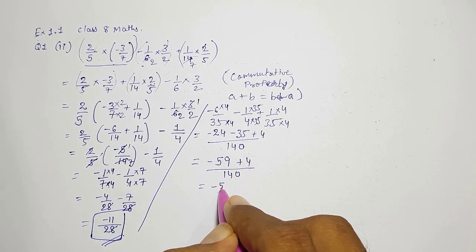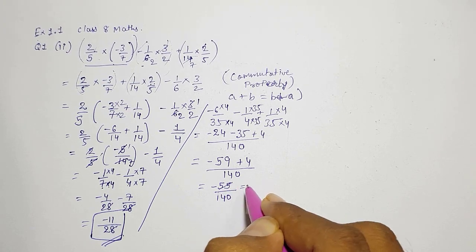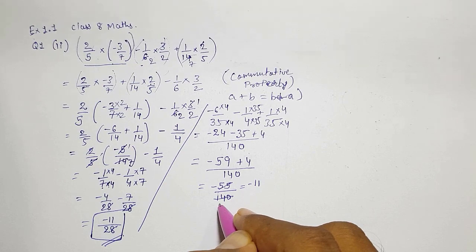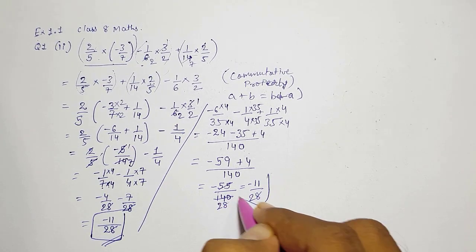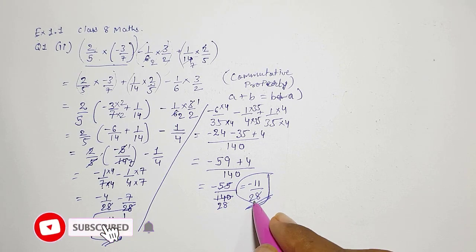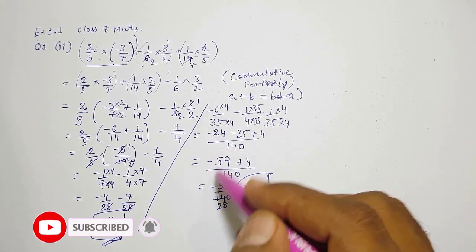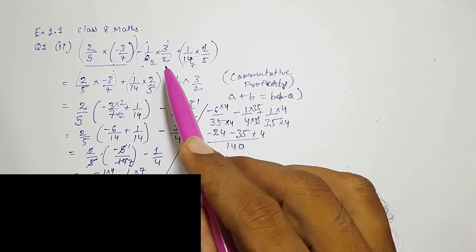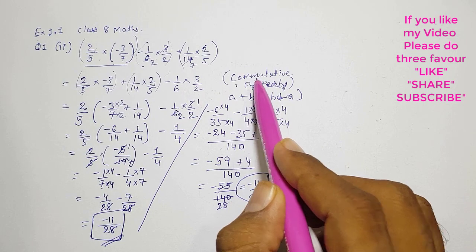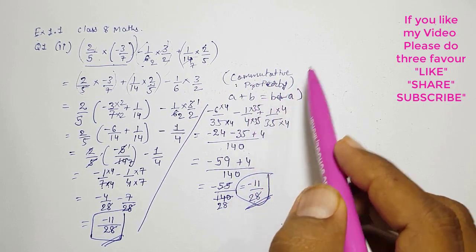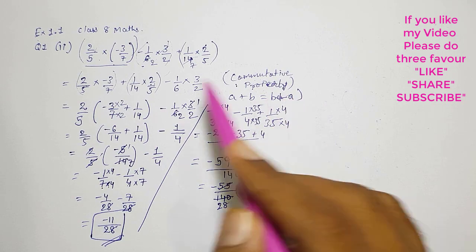So that will be minus 55 by 140. We can cancel this with the help of 5, so minus 11, 5 11s and 5 2s and then 8s, so here, yes, here also we are getting the same answer you can see. Okay, but this method is not useful right now because they told you to use suitable properties, so we need to use this property. Then this is commutative property and here we had used distributive property, both the properties that we have to use.